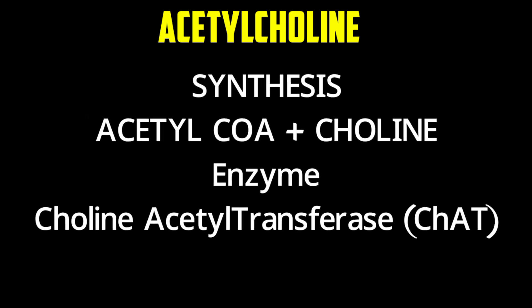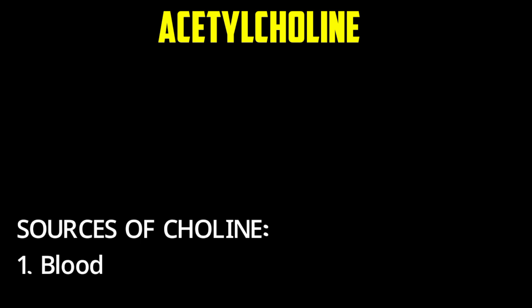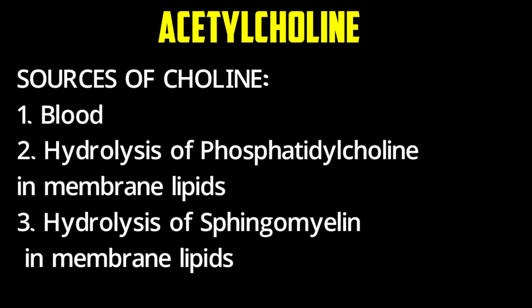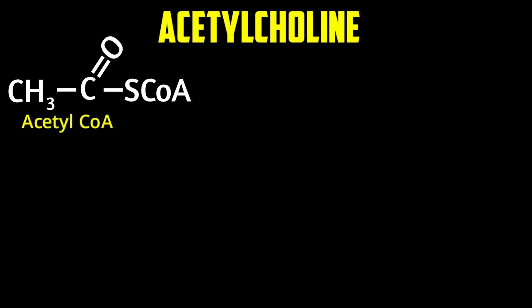Now let's go into detail on synthesis, storage, and catabolism. Acetylcholine is secreted from parasympathetic neuronal fibers. It is synthesized from acetyl-CoA and choline, catalyzed by the enzyme choline acetyltransferase. Choline can be obtained from the blood, from hydrolysis of phosphatidylcholine in membrane lipids, or from hydrolysis of sphingomyelin in membrane lipids.